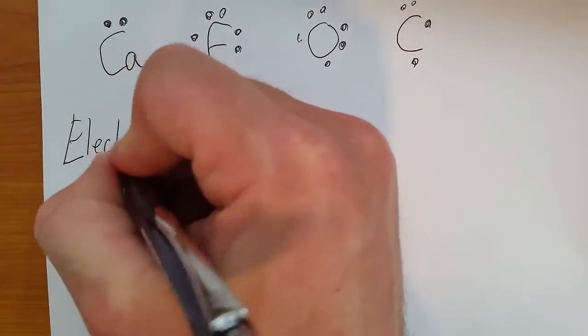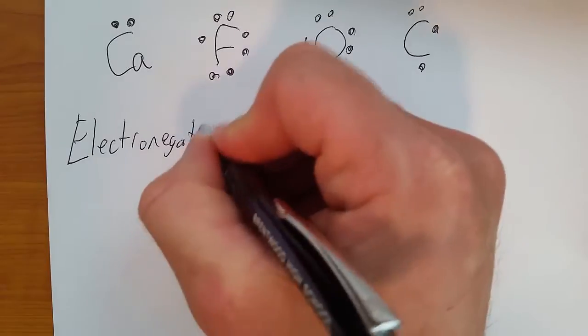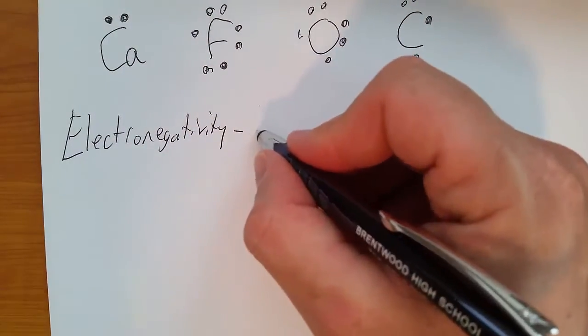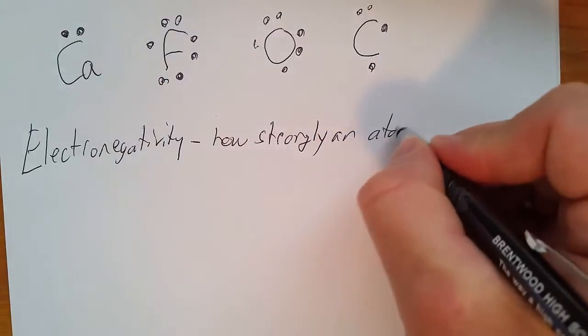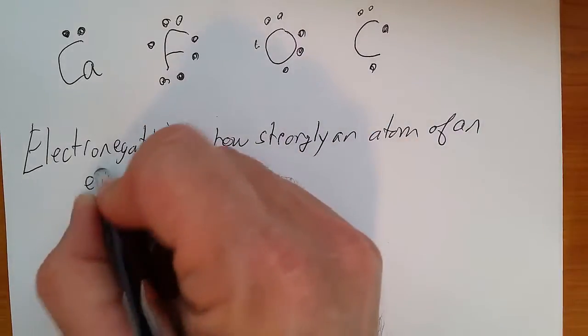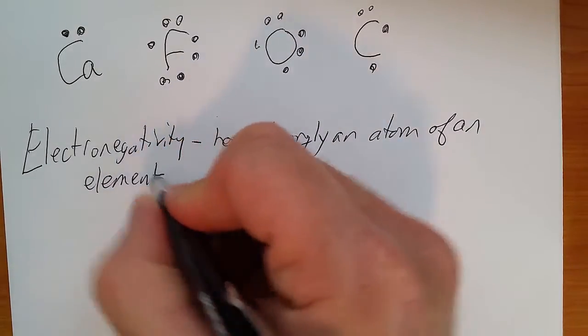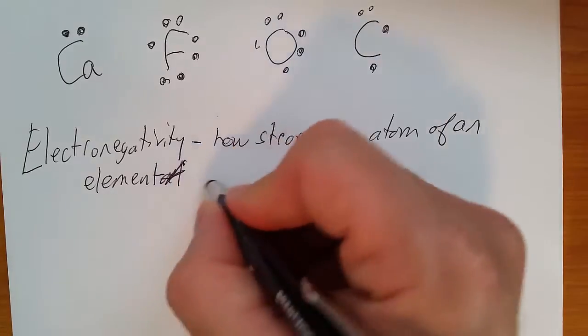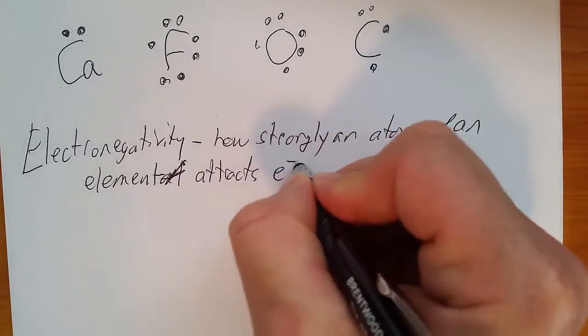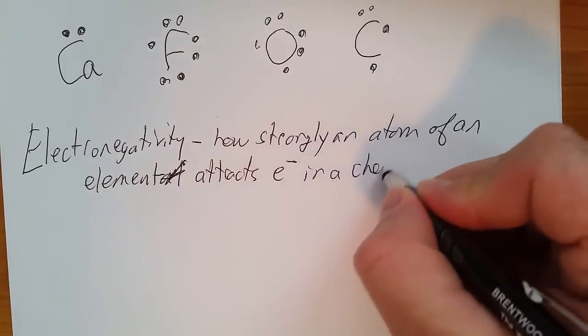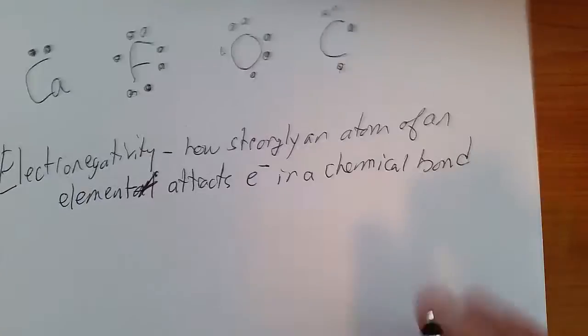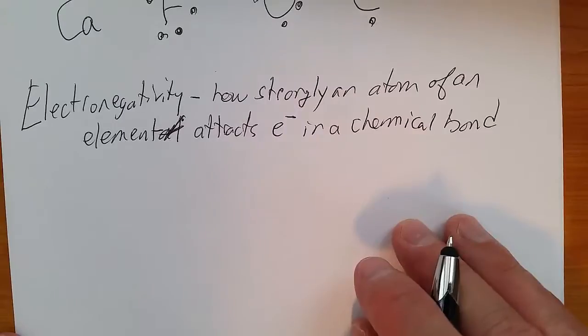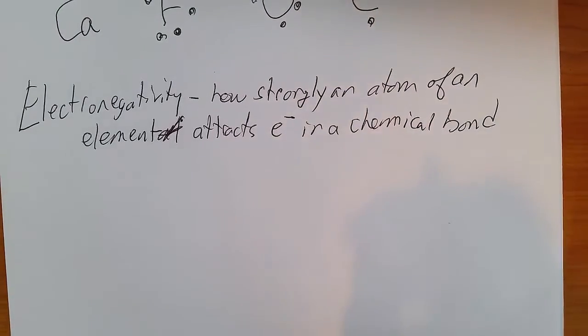Electronegativity. The fancy definition is how strongly an atom of an element attracts electrons in a chemical bond. Easy definition is just its affinity for electrons. So something that's more electronegative wants electrons more. Something that's less electronegative wants electrons less.